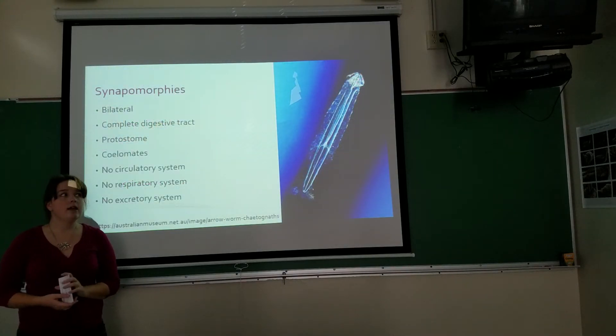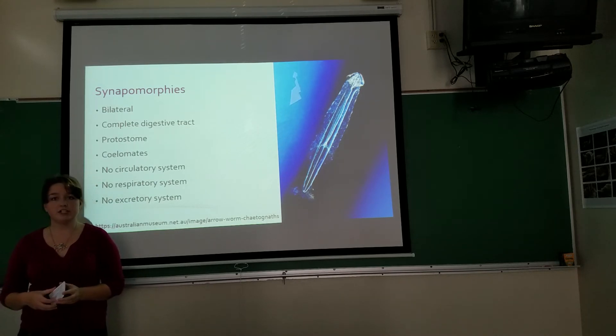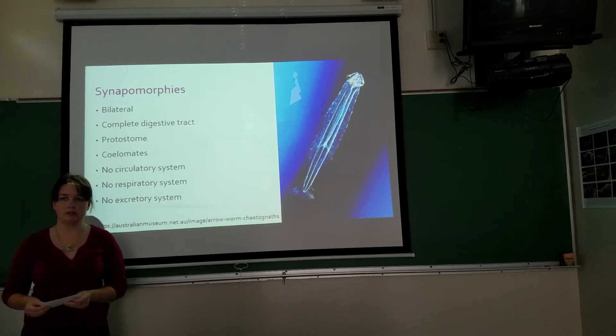So what is a Chaetognath? Chaetognath is a planktonic animal that displays bilateral symmetry, it has a complete digestive tract, it's a protostome, a coelomate, and it lacks a circulatory, respiratory, and excretory system.